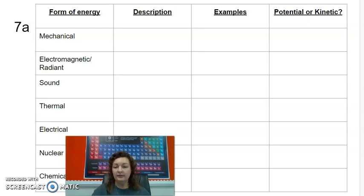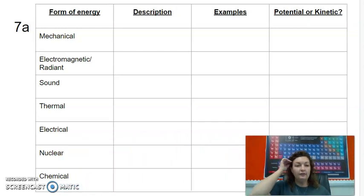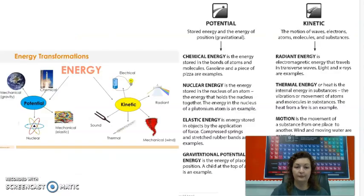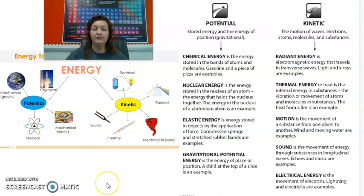All right. So this one is a table for you to learn all the different forms of energy. So you're supposed to write down a description of each, an example of each, and is it potential or is it kinetic? So I'm going to go and I'm going to explain each one to you, and I just need you to fill this table out as I'm explaining. So I broke it down into what is potential and what is kinetic. We're going to start with everything that's potential energy.